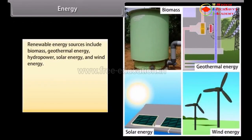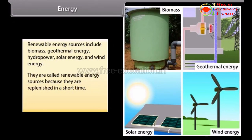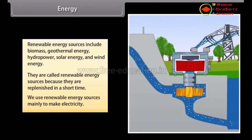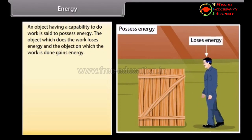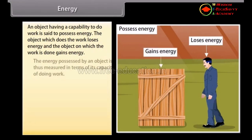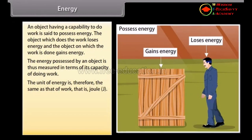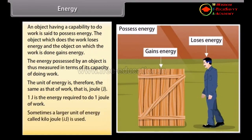Renewable energy sources include biomass, geothermal energy, hydropower, solar energy, and wind energy. They are called renewable because they are replenished in a short time. We use them mainly to make electricity. An object having a capability to do work is said to possess energy. The object which does work loses energy, and the object on which work is done gains energy. The unit of energy is joule — the same as work. One kilojoule equals one thousand joules.